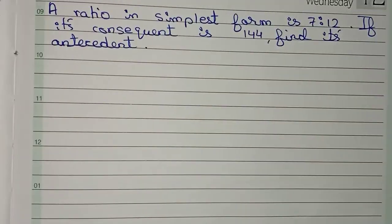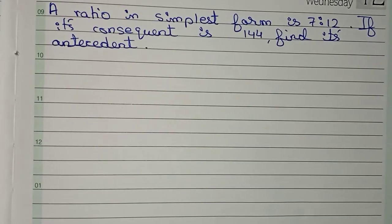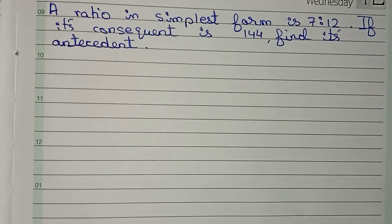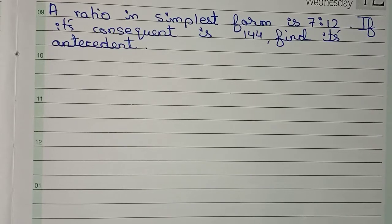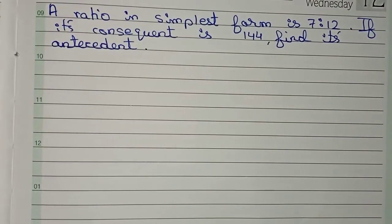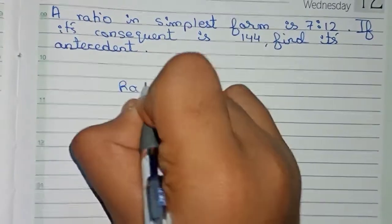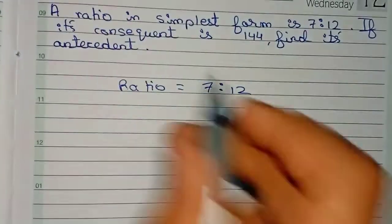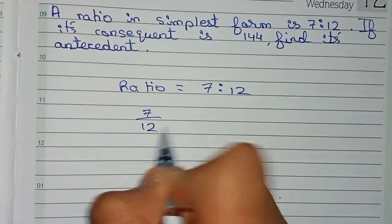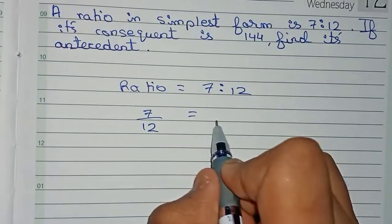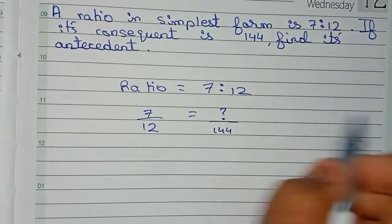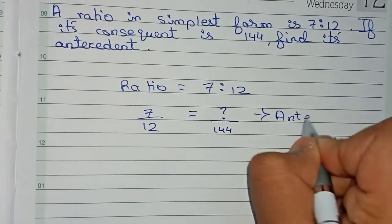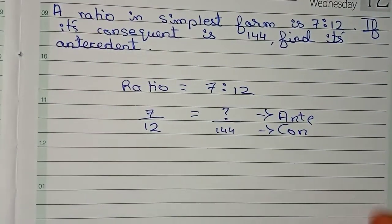Now the second question: a ratio in simplest form is 7 is to 12. If its consequent is 144, find its antecedent. As mentioned, the upper part is the antecedent and the lower part is the consequent. So in this question, the consequent — the lower part — is given as 144. We write ratio equals 7 by 12 in fractional form, and we have to find the upper part, which is the antecedent.